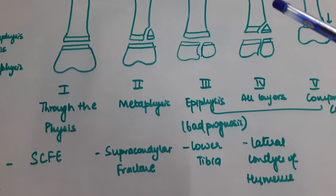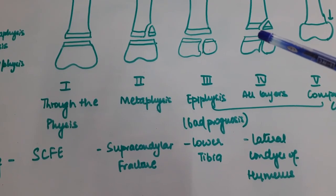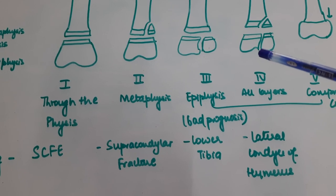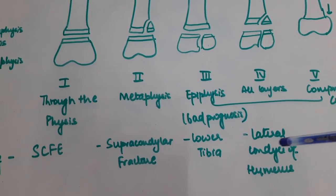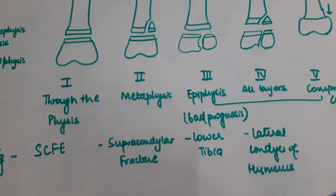In the fourth type, all layers—the metaphysis, physis, as well as epiphysis—are involved. An example of this is lateral condyle fracture of humerus.